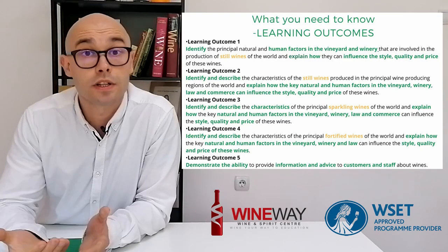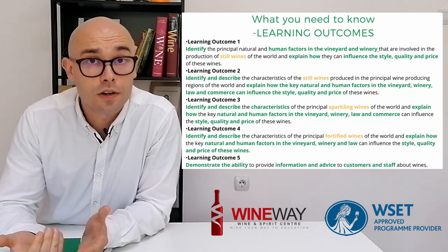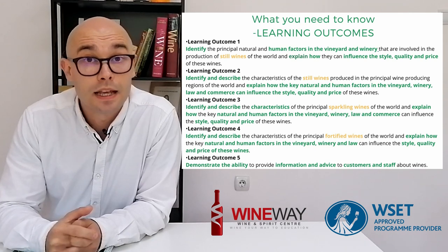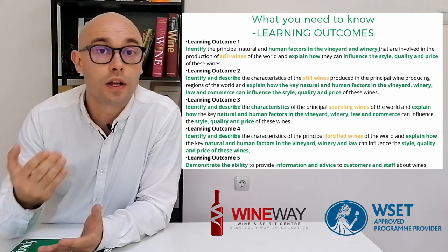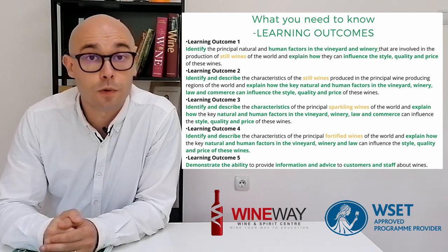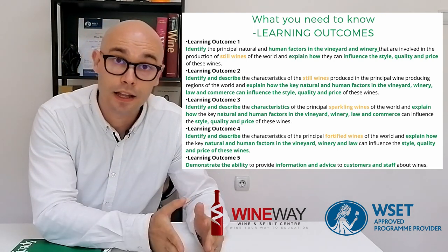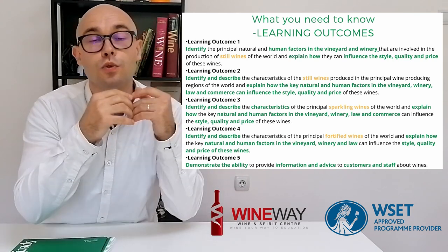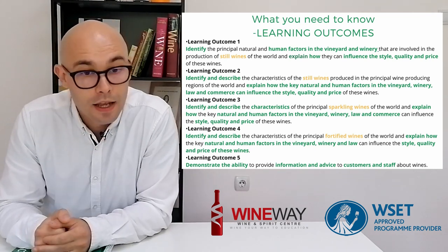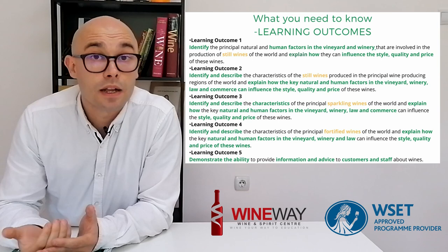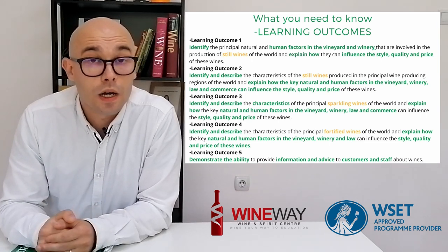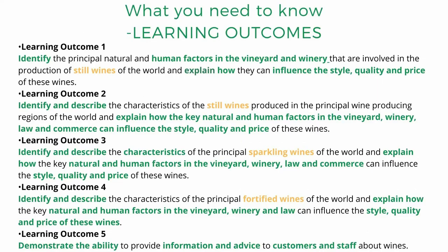For example, diurnal range is a natural factor in the Ribera del Duero region in Spain that affects the style of wine in that region. If you get a question about Ribera del Duero and a natural factor that affects the style of the wine, you first need to identify that it is a factor in that region, then explain how it affects the style of that wine. Learning outcome five is to demonstrate the ability to provide information and advice to customers and staff about wines, including food and wine pairing, storage and serving.